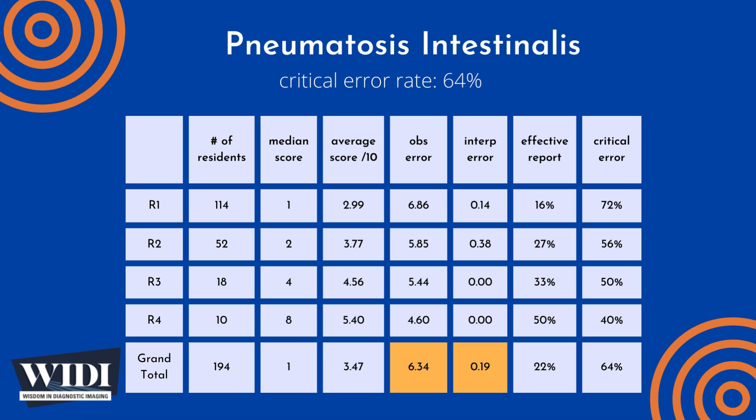Overall, the average number of points lost out of 10 due to observational discipline was 6.34. At the same time, only 0.19 points were lost due to interpretive errors on the part of the residents.